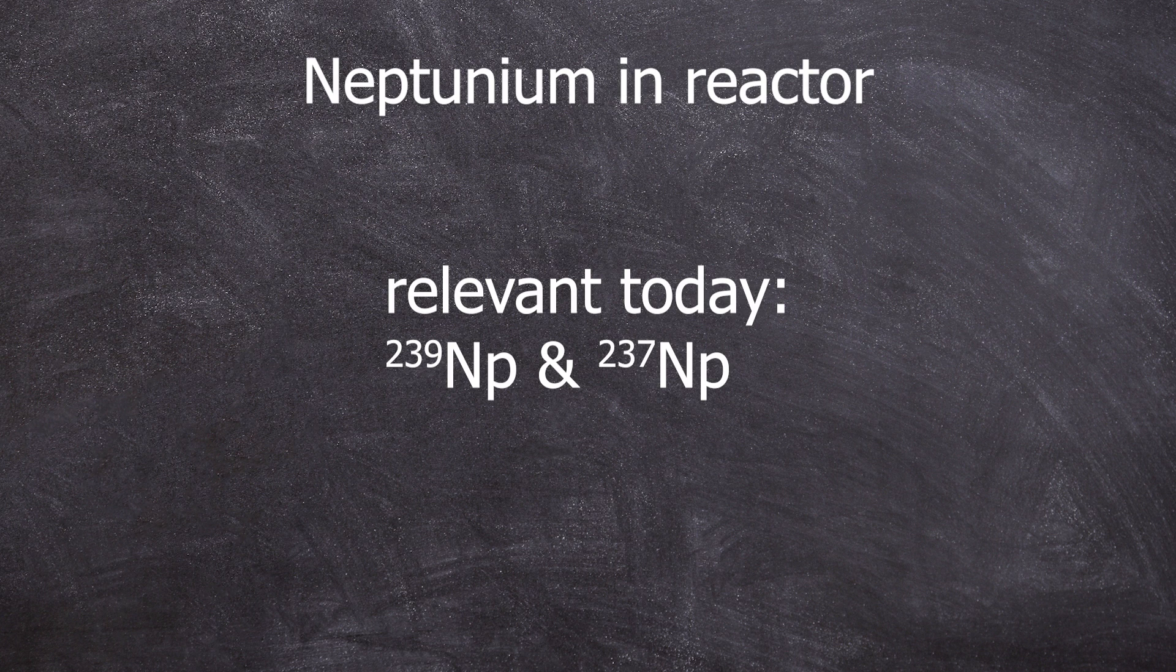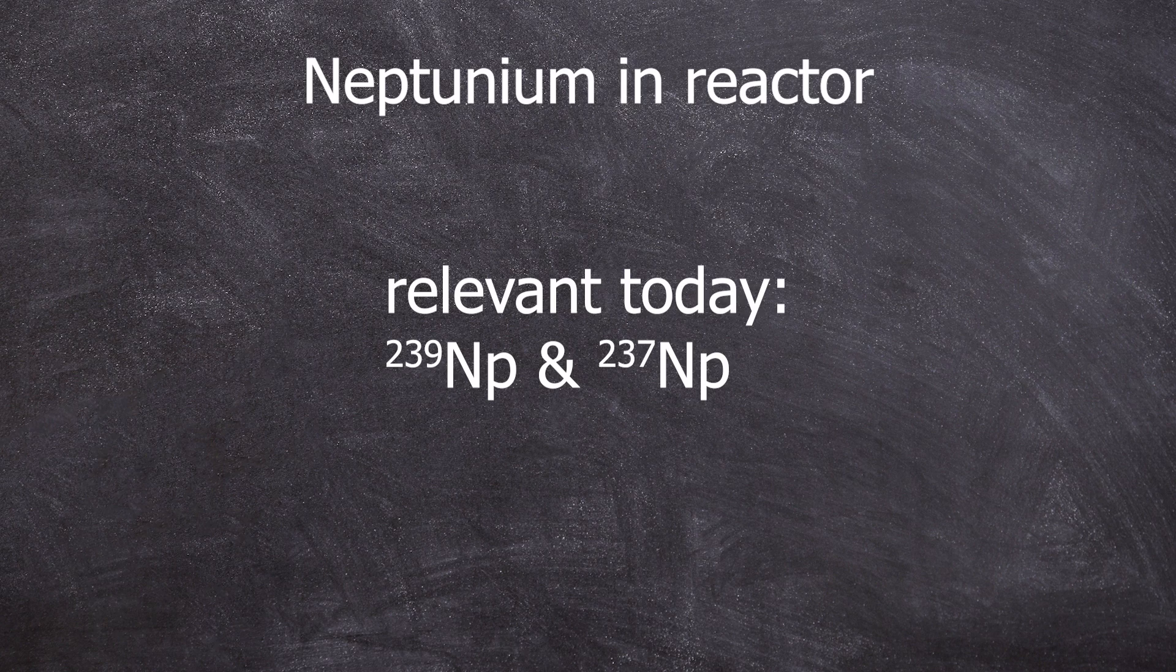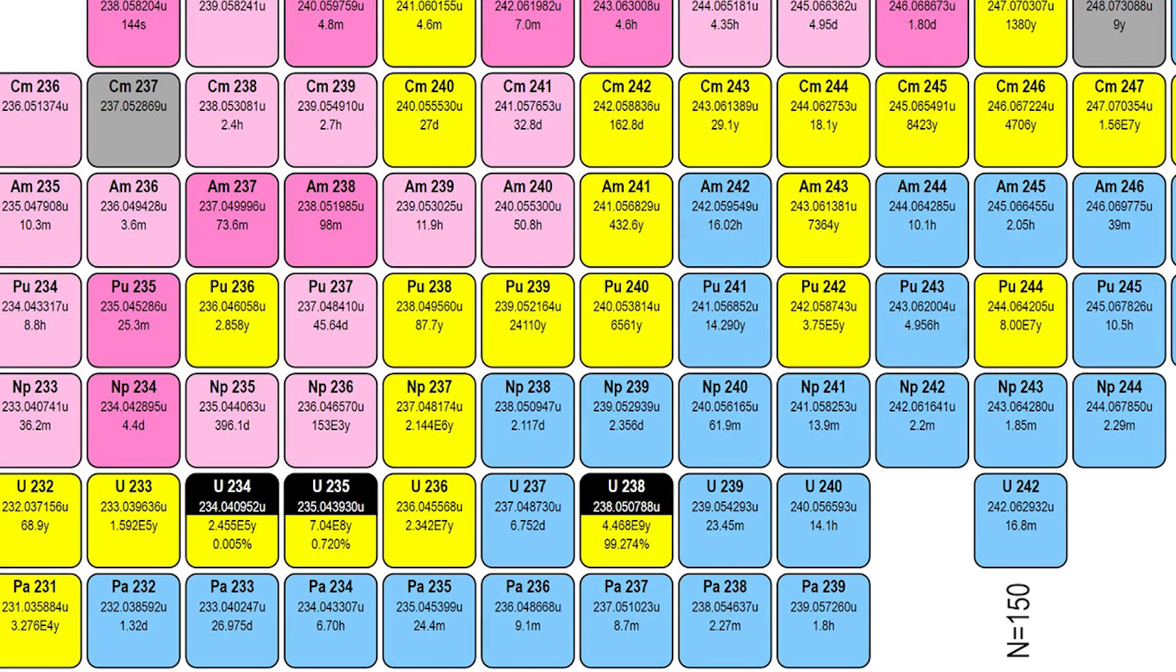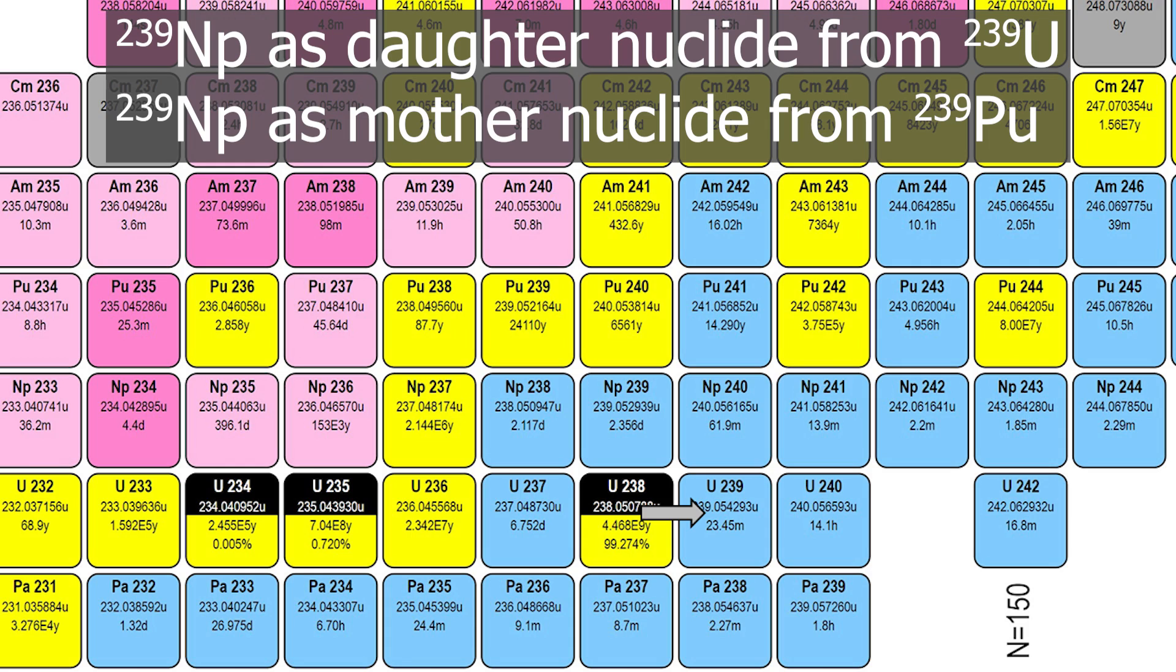The two important Neptunium isotopes are Neptunium-239 and, more importantly, Neptunium-237. Let's proceed chronologically in the production. The short-lived Neptunium-239, with a half-life of 2.35 days, is the daughter nucleus of Uranium-239, which is formed by bombarding Uranium-238 with neutrons during reactor operation. Neptunium-239 decays into Plutonium-239.